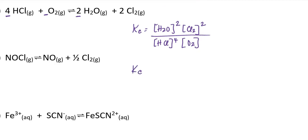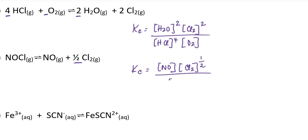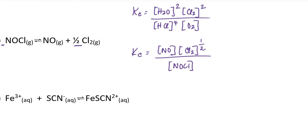Moving on to the next example: that would be the concentration of nitrogen monoxide multiplied by the concentration of chlorine gas. Notice that chlorine gas has a stoichiometric coefficient of one half, so I would raise it to the one-half power, divided by the concentration of NOCl. Notice the stoichiometric coefficient for NOCl is 1, understood, and so the exponent for NOCl is also 1, understood.